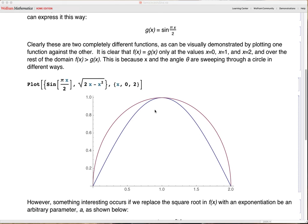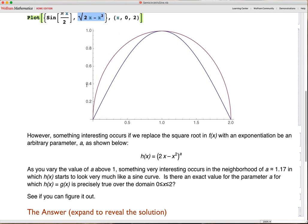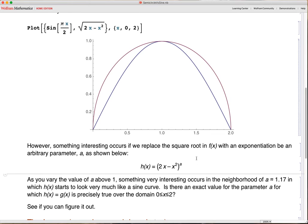But I noticed that something very interesting occurs if instead of taking this function and doing the square root, if instead you exponentiate to an arbitrary parameter value a, something interesting occurs because this circle will basically flatten out and start to look very much like a sine wave. And something very, very interesting occurs in the neighborhood of about a equals,